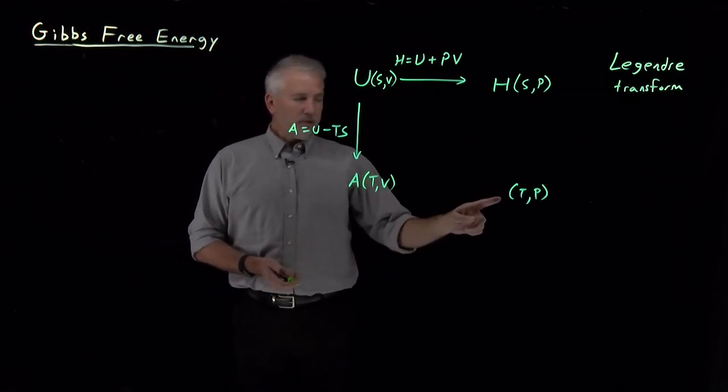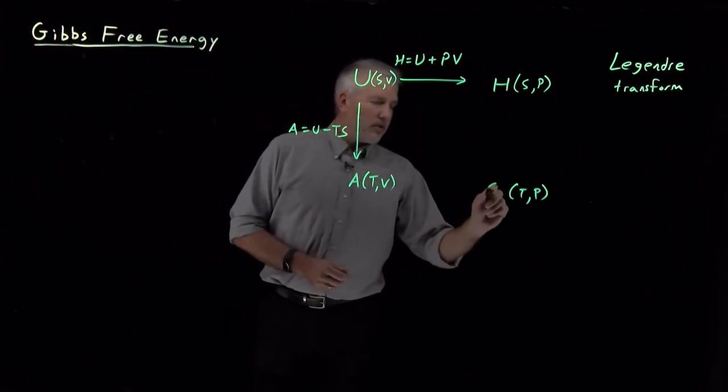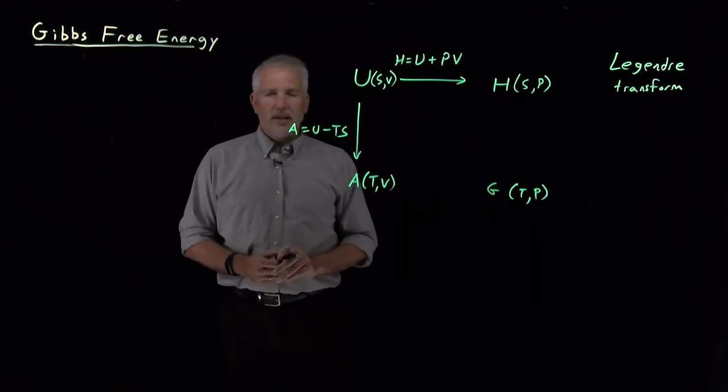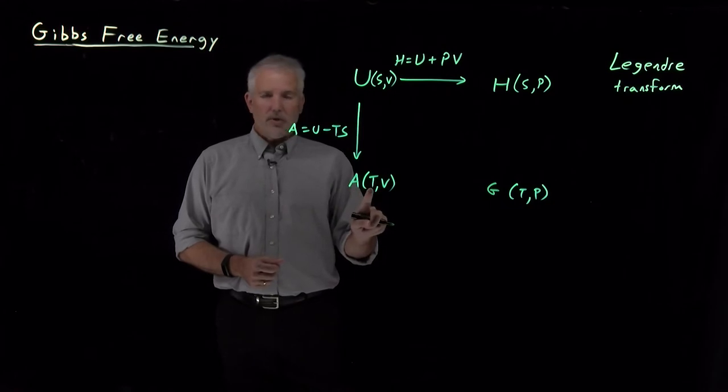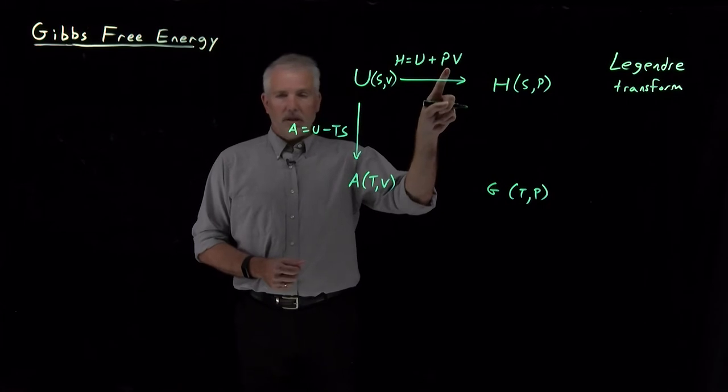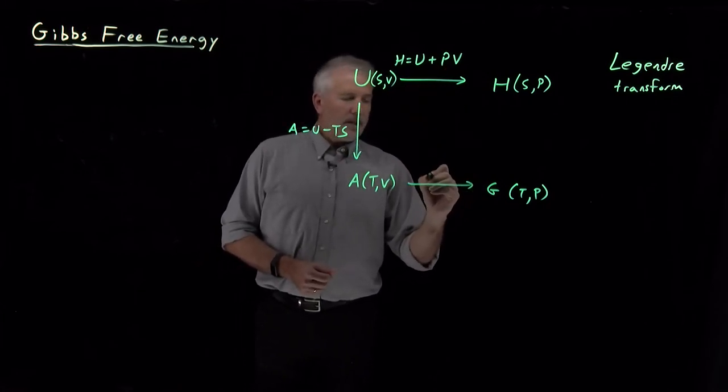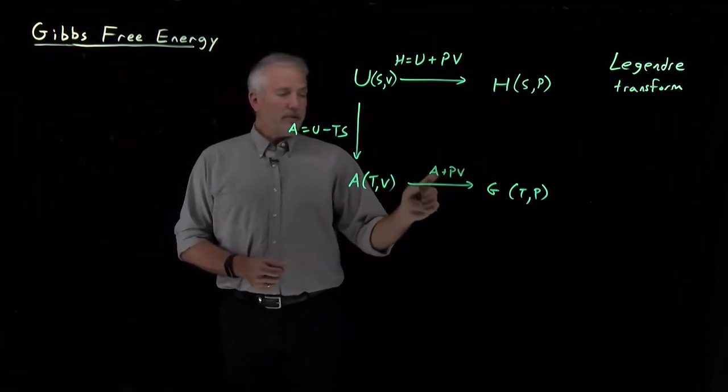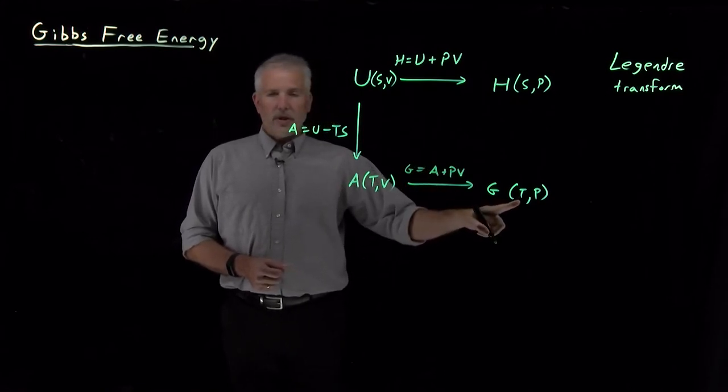So we're interested in doing the same sort of thing now to get a function, which we're going to call this new function G for the Gibbs free energy, that is a natural function of T and P. We can think about doing that in two different ways. We can take the Helmholtz free energy, which is a natural function of T and V, in order to convert it to a natural function of T and P. We can use this Legendre transform. We can define it as the Helmholtz energy plus PV. That will give us a function whose natural variables are T and P.